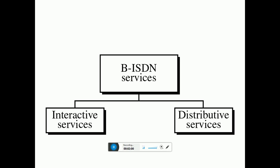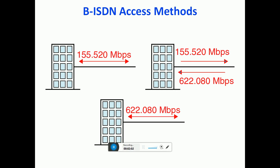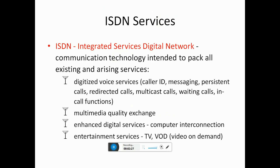B-ISDN access methods support 155.520 Mbps per second for outgoing connections. Incoming bandwidth is 622.080 Mbps per second. This is part of the ISDN integrated service digital networking framework.